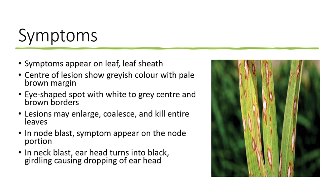The symptoms appear on the leaf and leaf sheath. The center of the lesion shows a grayish-white color with a pale brown margin. Here you can see the white-grayish color in the center and pale brown margin. The typical symptom of this disease is eye-shaped or spindle-shaped lesions with a white to gray center and brown borders.